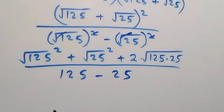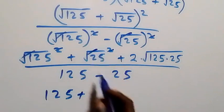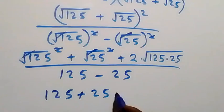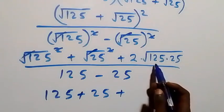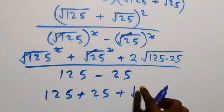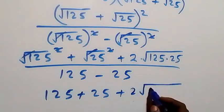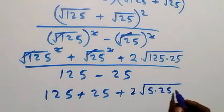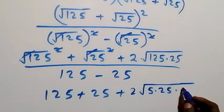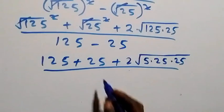Simplifying further: square cancels square root giving 125, plus square cancels square root giving 25. For the cross term, 125 can be written as 25 times 5, so we have 2 times root of 5 times 25 times 25. The denominator 125 minus 25 gives us 100.